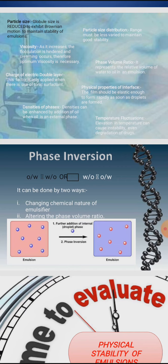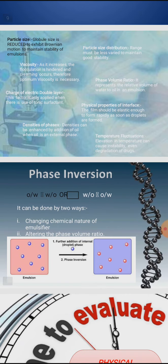The rate of creaming decreases fourfold when the globule diameter is halved. In microemulsion, the rate of creaming is insignificant. It is necessary to choose the optimum globule size for maximum stability of an emulsion. On the industrial scale, emulsions are passed through a colloidal mill to reduce globule size. After preparation and during aging, emulsions are also evaluated for globule size.